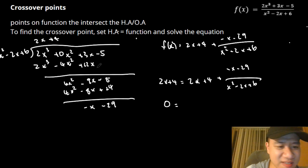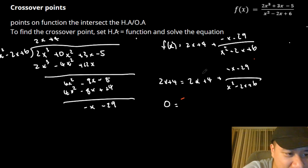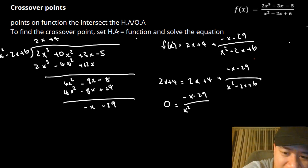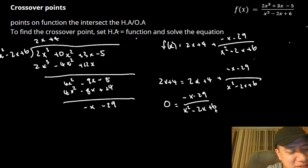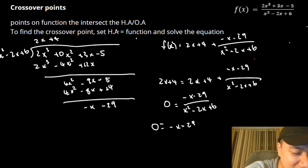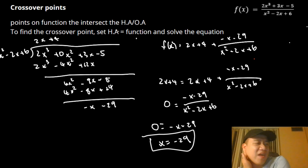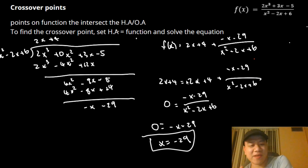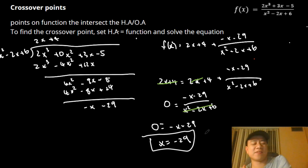Now we multiply both sides by the denominator, and we get 0 = −x − 29, so x = −29. That's our crossover point. Using the remainder form makes this so much easier — the matching terms cancel out, we're left with just the remainder fraction, drop the denominator, and solve. This is kind of a one-size-fits-all approach.